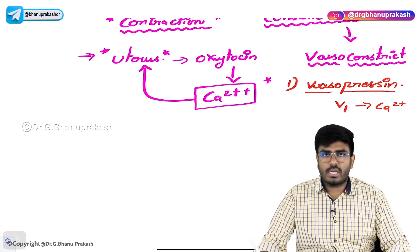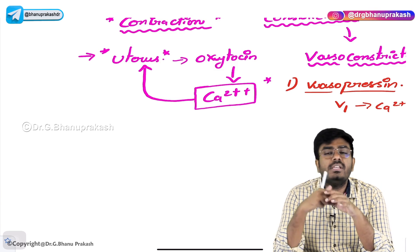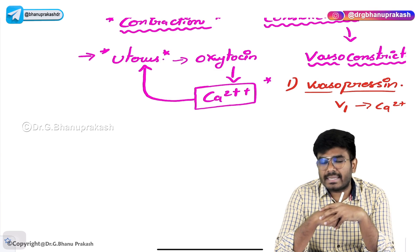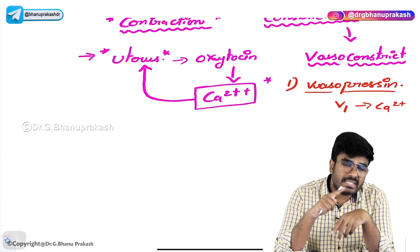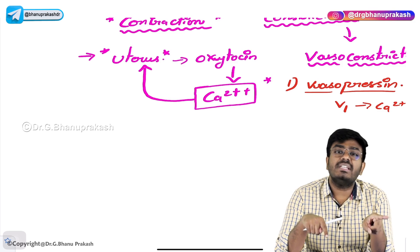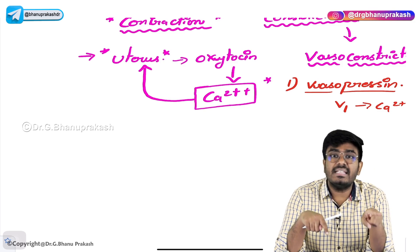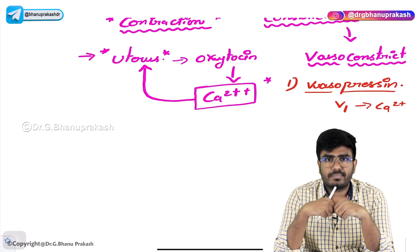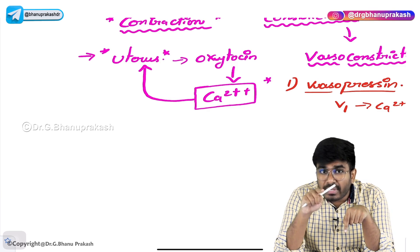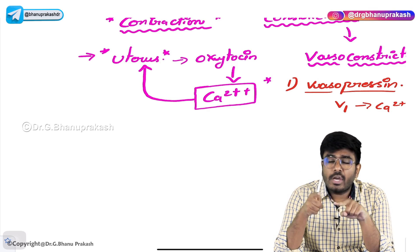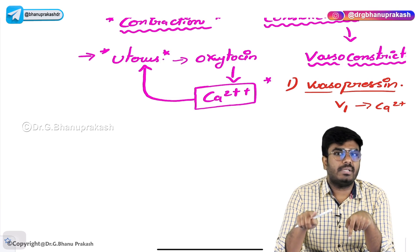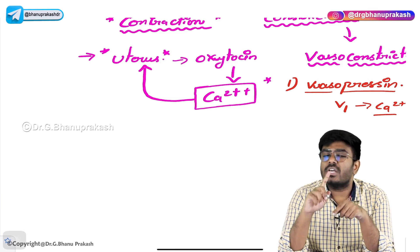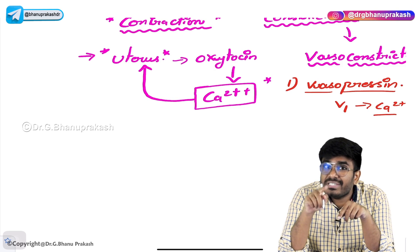Remember: whenever someone asks you which secondary messenger antidiuretic hormone uses, it depends on where the antidiuretic hormone is acting. If it's acting on the principal cells for water reabsorption, the receptor used is V2 receptor and the secondary messenger produced inside the cell is cAMP, and aquaporin-2 channels are produced for water absorption. Here, on the blood vessels, on the smooth muscle cells, there is V1 receptor. When vasopressin acts on V1 receptor, calcium is produced. V1 receptor is also a type of G-protein coupled receptor, but inside it has a GQ component.